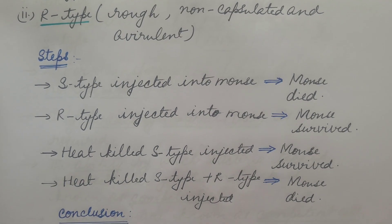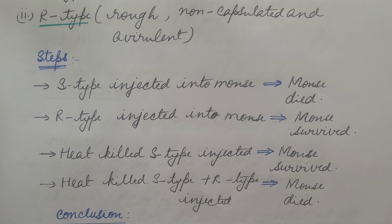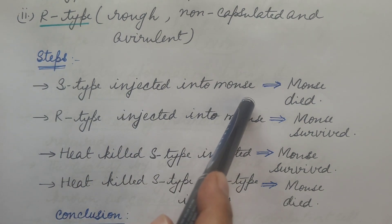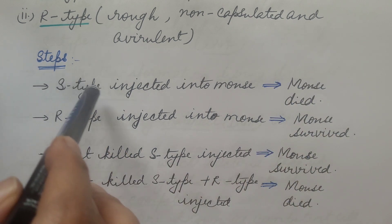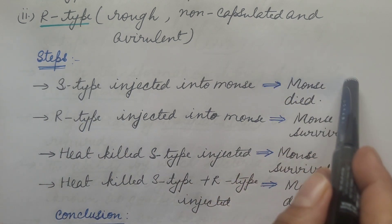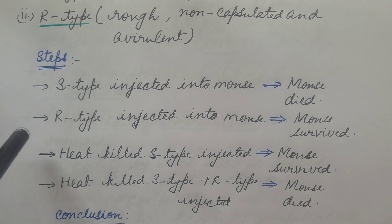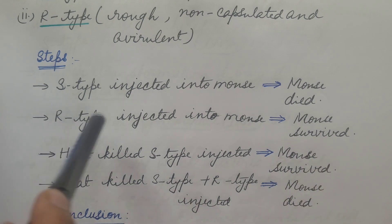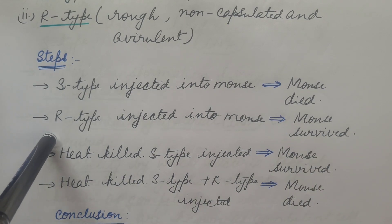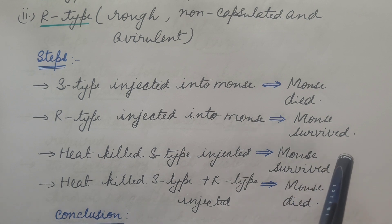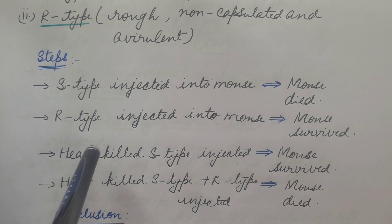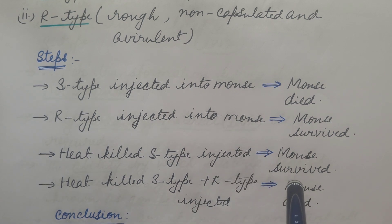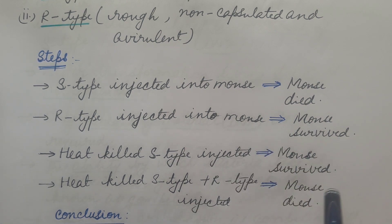So how was this experiment done? First of all, S-type was injected into a mouse and the mouse died, because it is virulent and causes disease. When R-type was injected into a mouse, the mouse survived as it is avirulent. Heat-killed S-type was then injected into a mouse, and the mouse survived because the virulent bacteria had been heat killed, so no disease was caused.